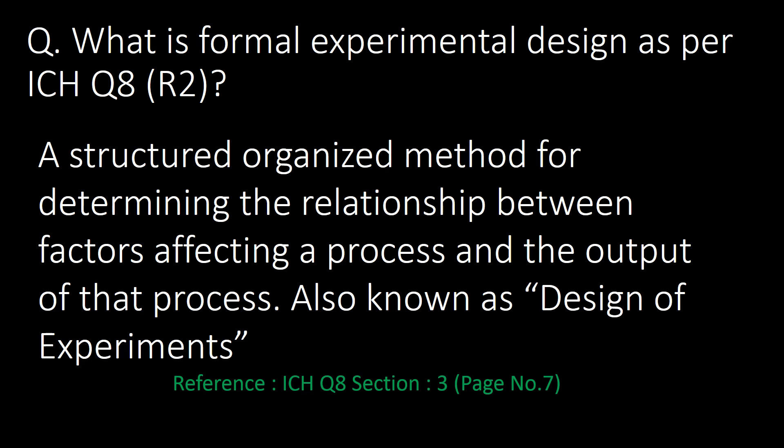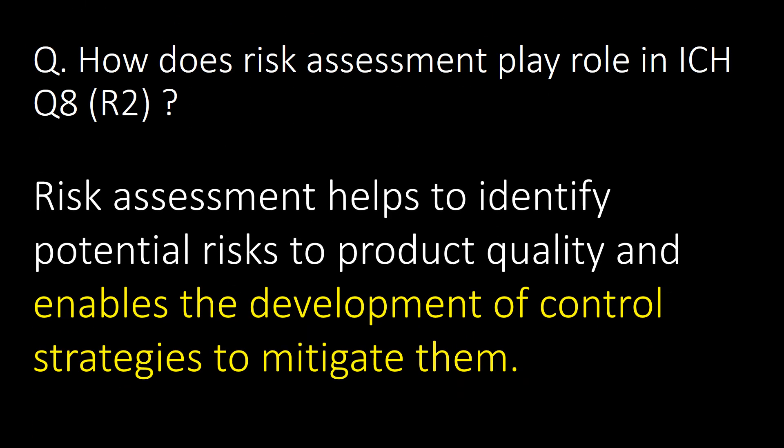What is formal experimental design as per ICH Q8 R2? Formal experimental design is a structured, organized method for determining the relationship between factors affecting a process and the output of that process. Formal experimental design is also known as design of experiments (DoE).